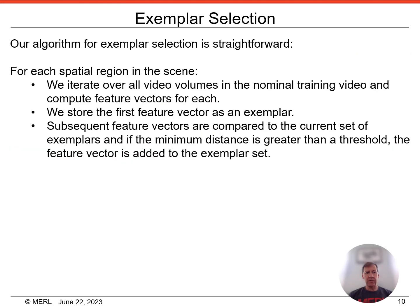Our algorithm for exemplar selection is straightforward. For each spatial region in the scene, we iterate over all video volumes in the nominal training video and compute feature vectors for each. We store the first feature vector as an exemplar. Subsequent feature vectors are compared to the current set of exemplars, and if the minimum distance is greater than a threshold, the feature vector is added to the exemplar set.